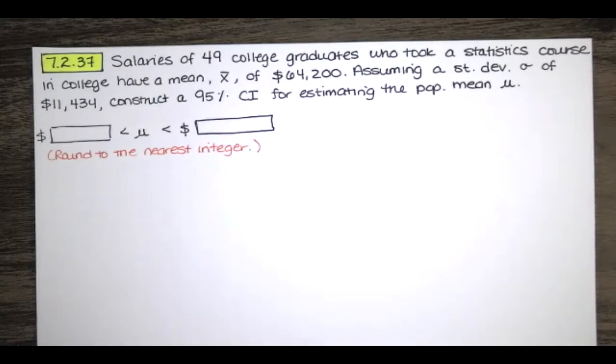The problem statement says that salaries of 49 college graduates who took a statistics course in college have a mean X bar of $64,200. Assuming a standard deviation sigma of $11,434, construct a 95% confidence interval for estimating the population mean mu.